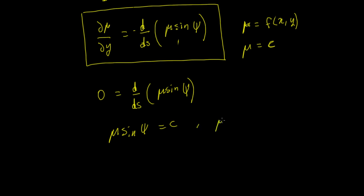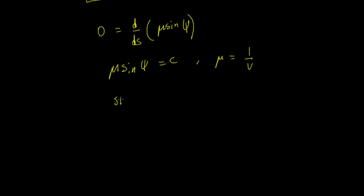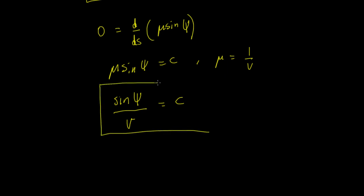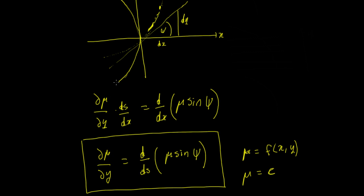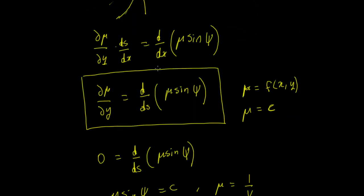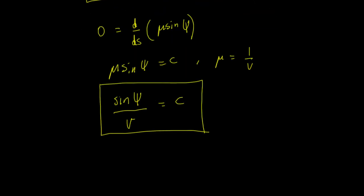Since mu equals one upon velocity v, we have sine of phi upon v equals a constant C, which is just Snell's law. This is another way of deriving Snell's law that also gives insight when we think about light passing not through a single layer but through a medium with a continuously varying refractive index in the y direction. That's all for this video - I hope that's useful and I'll see you in the next one.